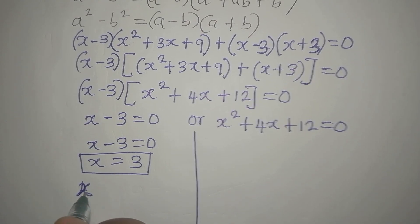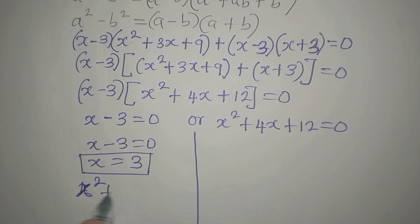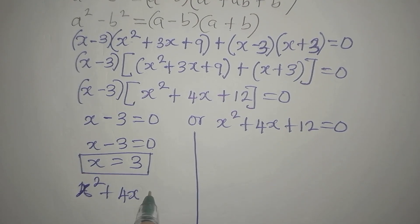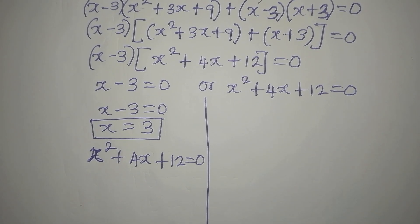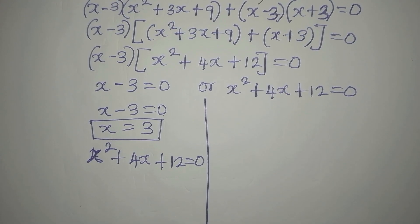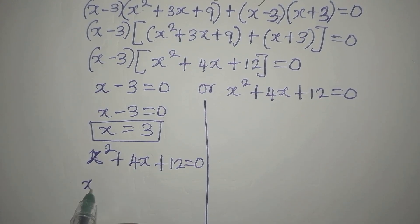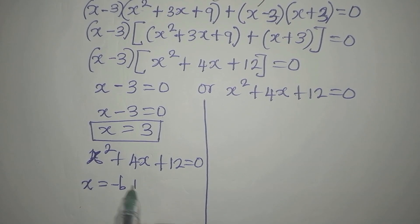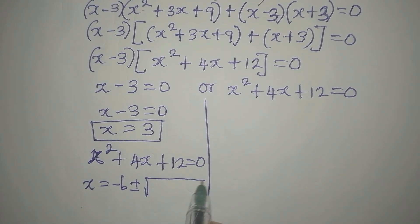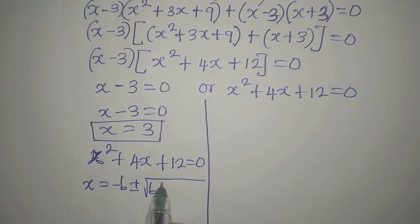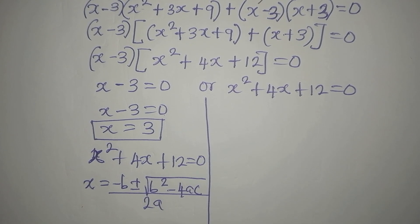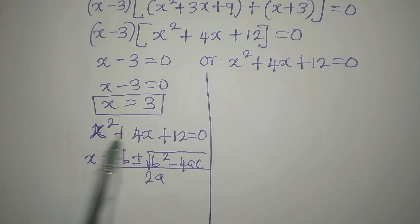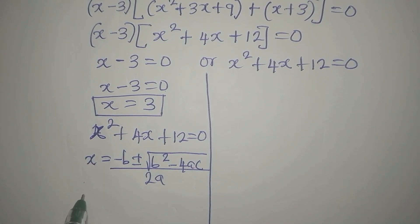So I will now write x squared plus 4x plus 12 equals 0. The quadratic general formula is: x equals minus b, plus or minus the square root of b squared minus 4ac, all over 2a. Our a is 1, b is 4, and c is 12.